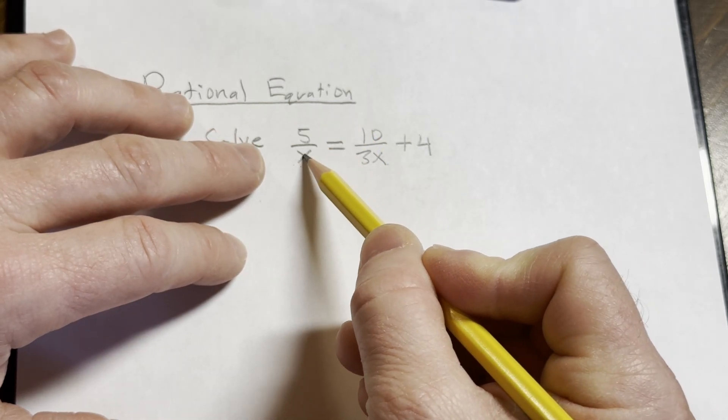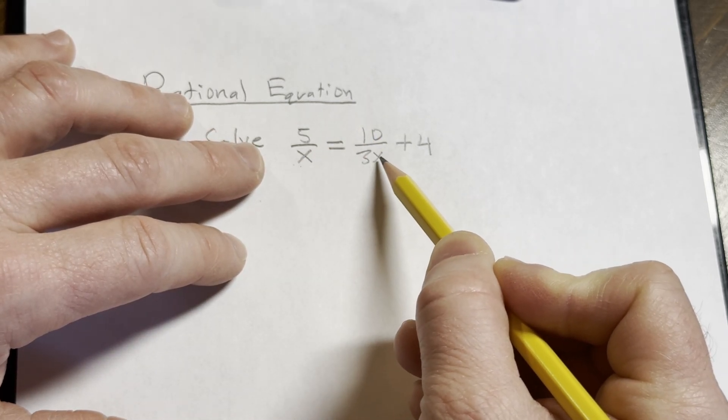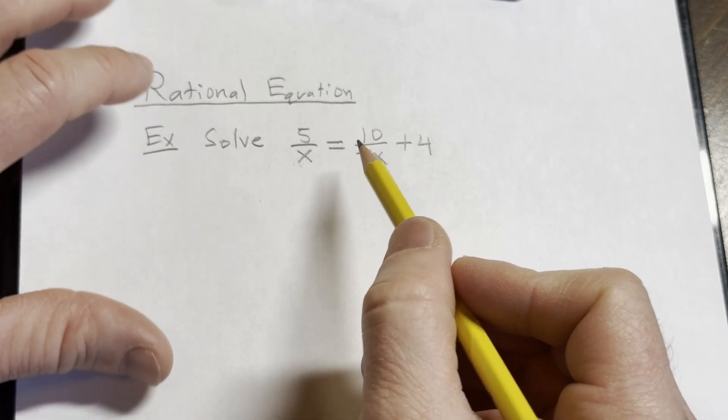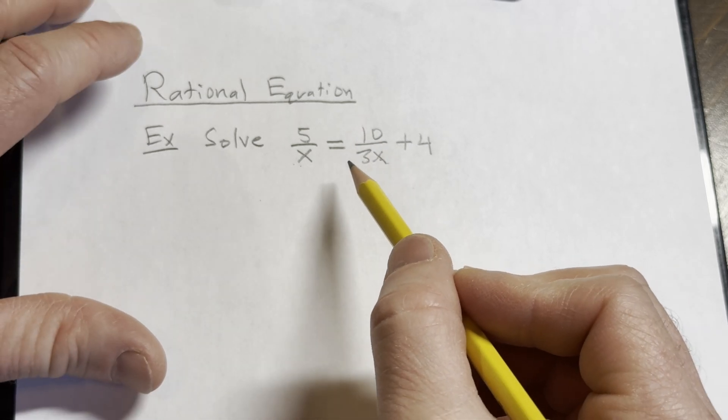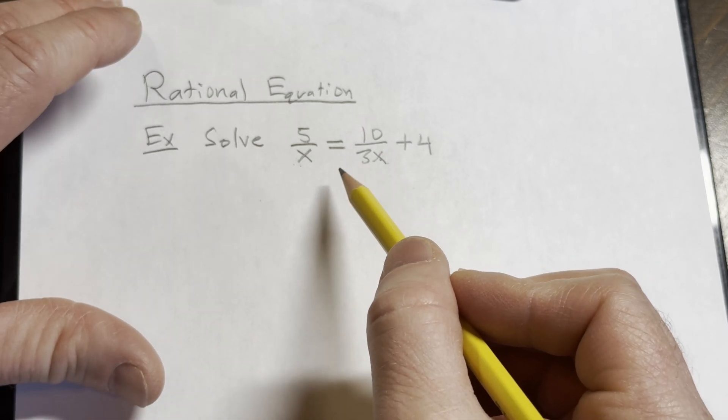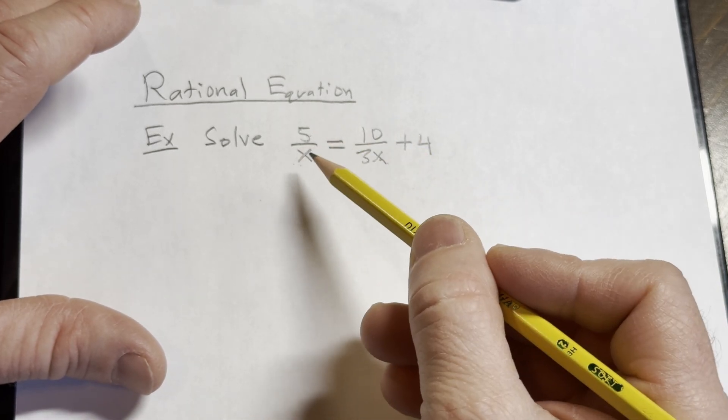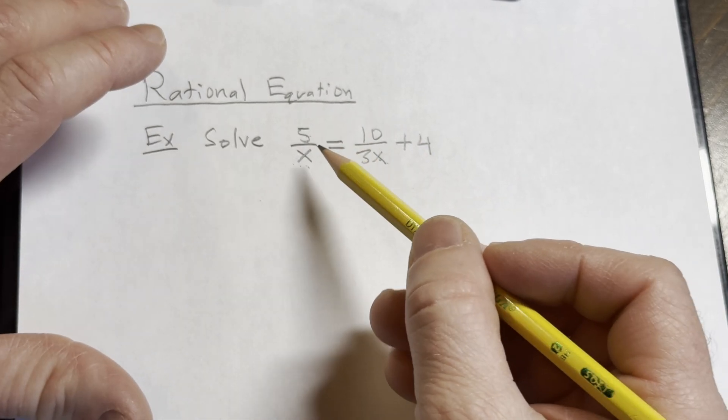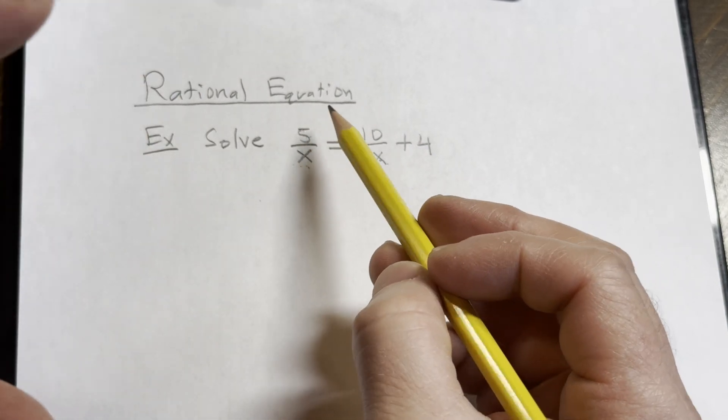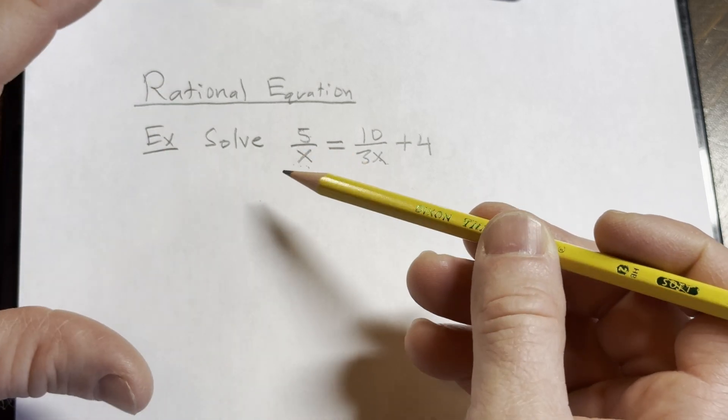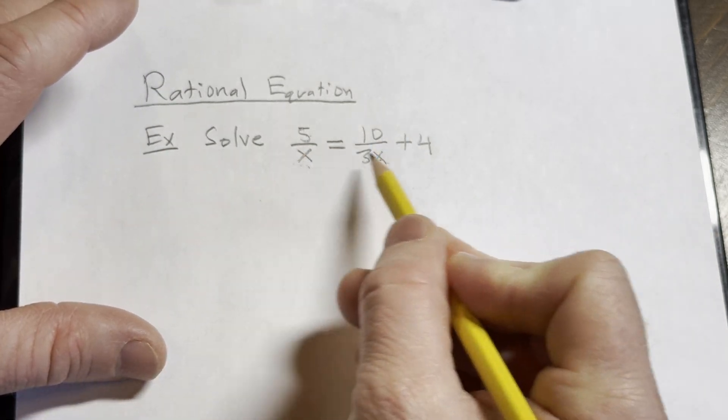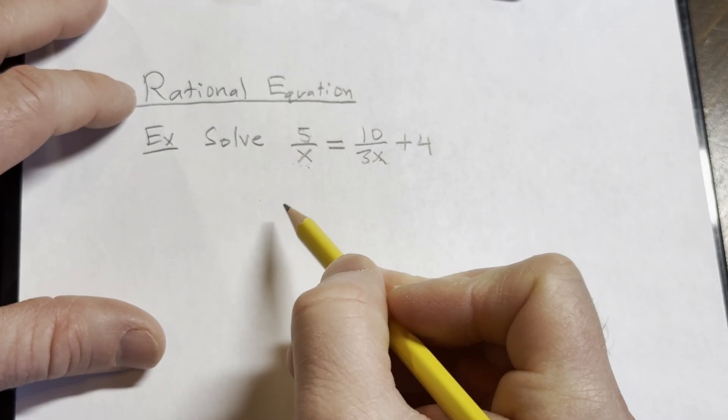And if x were 0 here, that's a problem. Likewise, if x were 0 here, that's a problem because you can never have 0 in the denominator. Remember, the top one is called the numerator, the bottom one is called the denominator. Sometimes I'll say top, sometimes I'll say bottom. By top, I mean numerator. By bottom, I mean the denominator. In this case, you can see x can't be 0.